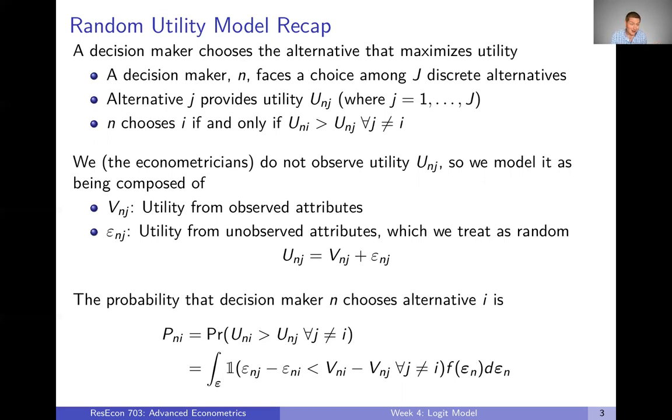The issue econometrically here is that we the econometricians do not actually observe utility. We observe the choice that results from utility maximization but not the utility itself. So we have to model utility as being composed of two components: utility from observed attributes, which we denote capital V and we call that representative utility, and then utility from unobserved attributes, which we denote as an epsilon and we're going to treat that as random. Those are just additive. This is a completely general way of dividing utility into utility from observed and from unobserved attributes.